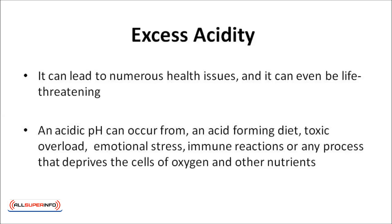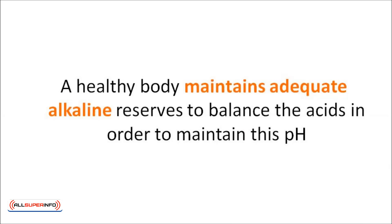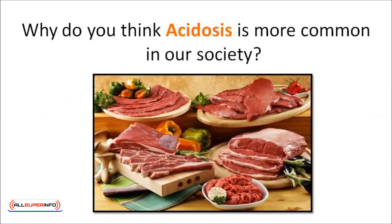An acidic pH can occur from an acid-forming diet, toxic overload, emotional stress, immune reactions, or any process that deprives the cells of oxygen and other nutrients. If the pH reaches an acidic level, the body will try to compensate using alkaline minerals. If the diet doesn't contain enough minerals to compensate, a buildup of acids in the cells will occur. However, a healthy body maintains adequate alkaline reserves to balance the acids in order to maintain its pH.